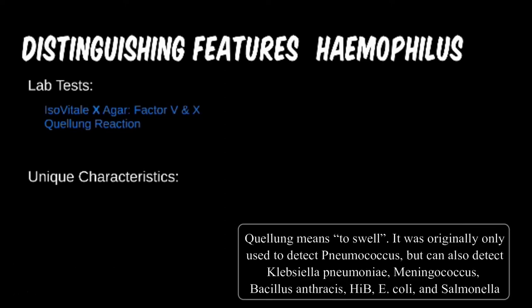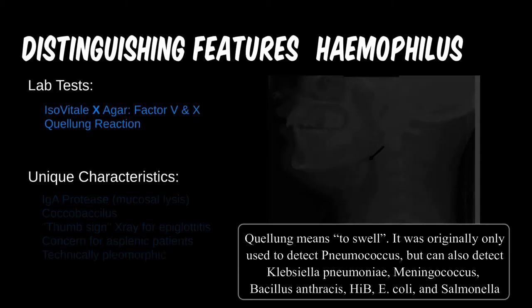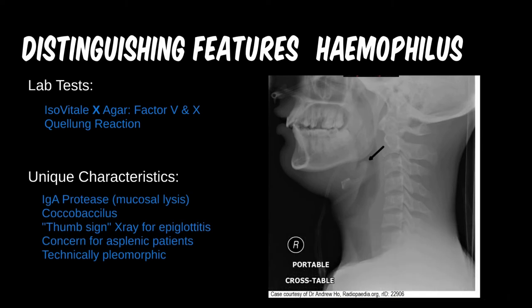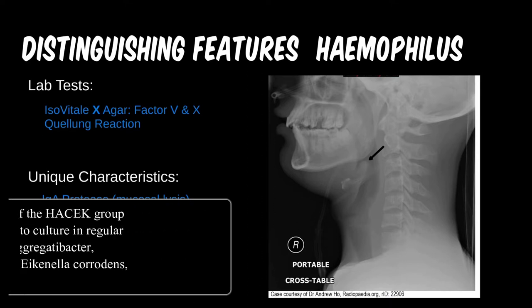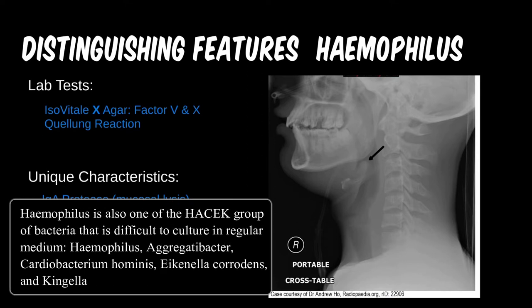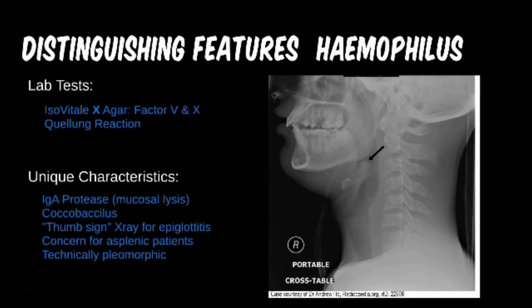The Quellung reaction allows for easier visualization under the microscope. We also again see IgA protease enzyme — what other bugs produce this enzyme, and what is its function? The thumb sign was mentioned in the last tier, but in this image we can see it a little clearer. The epiglottis is very distinct on the lateral view x-ray, almost looking like a hitchhiker's thumb coming from the anterior throat.